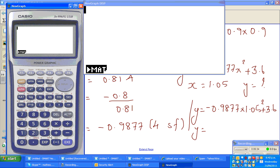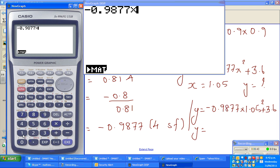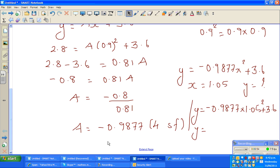So let me get a calculator. Menu, run. Negative 0.9877 times 1.05 squared plus 3.6. And here we go. The answer is 2.5 in 1 decimal place, or 2.5 meters. So that's the maximum height the truck can be. So this would be 2.5 meters in one decimal place.